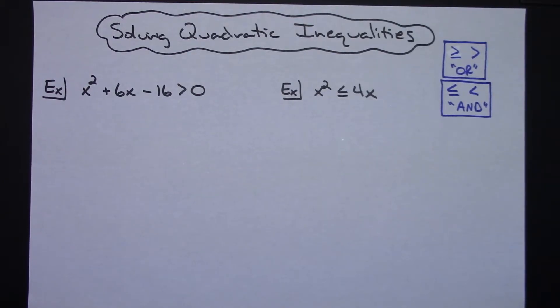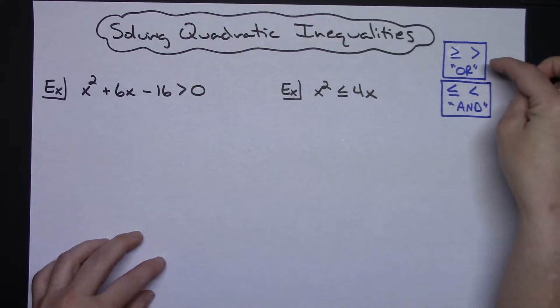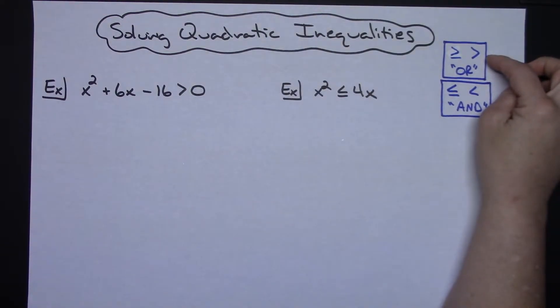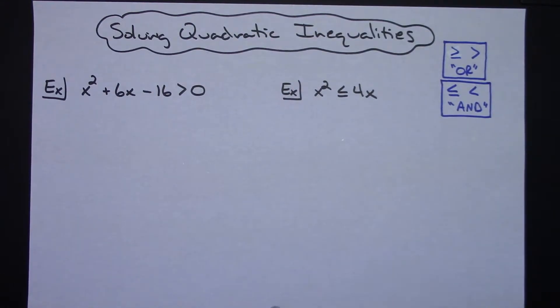In this video, we're going to take a look at solving quadratic inequalities. Before I start this, hopefully you have some background information with working with inequalities and that you can recognize that if your original inequality is greater than or equal to or greater than, then you're dealing with an OR inequality. And if you are working with less than or equal to or less than, then you're dealing with an AND inequality.